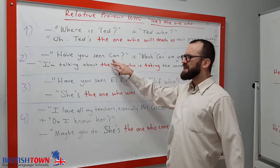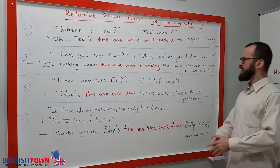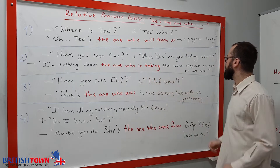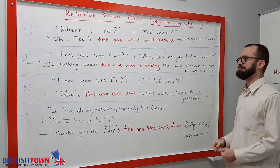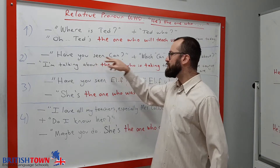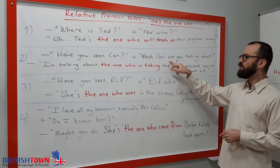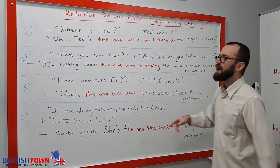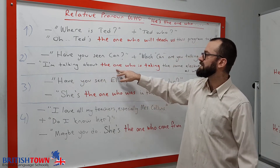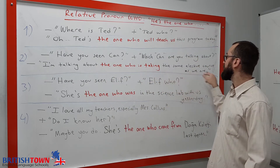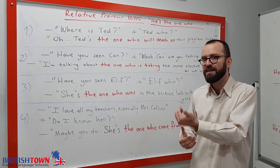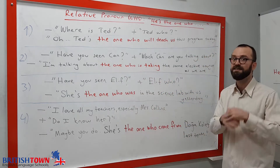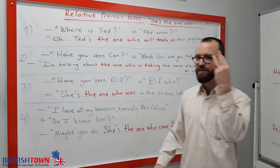The second example: 'Hello, have you seen Jam?' 'Which Jam are you talking about?' 'I'm talking about the one who is taking the same elective course as we are.' So again, we use 'the one who is taking' to identify which person we mean.